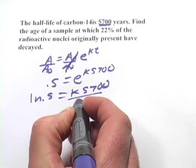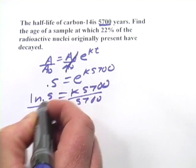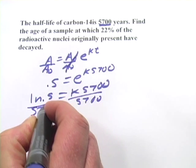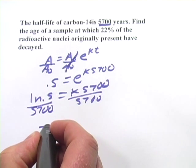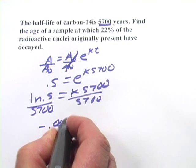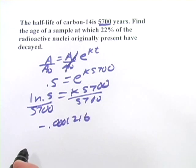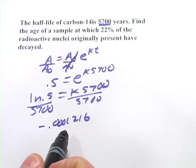So our constant is going to be the natural log of 0.5 divided by 5,700. And if you plug that into your calculator, you'll get something close to negative 0.0001216 and a few more numbers, but that's close enough for us.